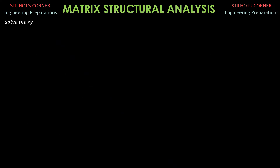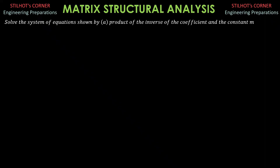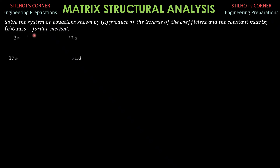For this problem, let's solve the system of equations shown by: A) the product of the inverse of the coefficient matrix and the constant matrix, and B) by the Gauss-Jordan method. We are using a calculator for Part A because this involves inverting a 4×4 matrix — finding the inverse of the coefficient matrix and the product of the inverse of the coefficient matrix and the constant matrix. This is the system of equations.